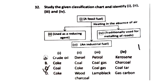Question 32: Study the given classification of coal. Coal is a fossil fuel formed in the absence of air. It is used as a reducing agent and as an industrial fuel. Coal is also traditionally used for metalling of roads. The right answer is Option C.